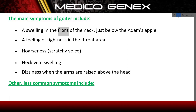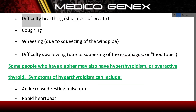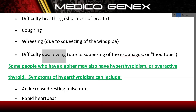Signs and Symptoms. The main symptoms of goiter include: a swelling in the front of the neck just below the Adam's apple, a feeling of tightness in the throat area, hoarseness, scratchy voice, neck vein swelling, and dizziness when the arms are raised above the head. Other, less common symptoms include difficulty breathing, shortness of breath, coughing, and wheezing due to squeezing of the windpipe, and difficulty swallowing due to squeezing of the esophagus (food tube).